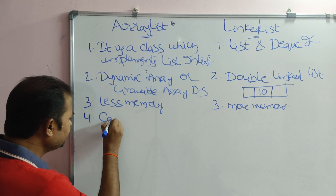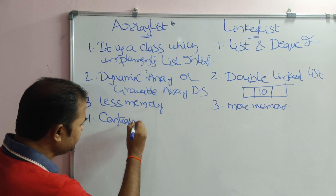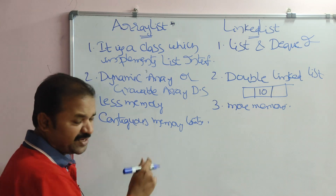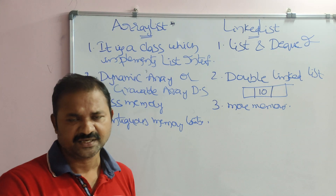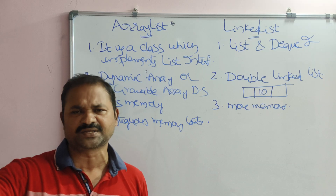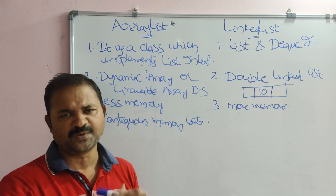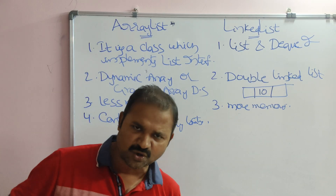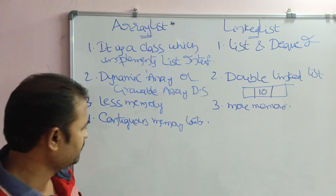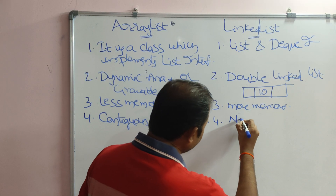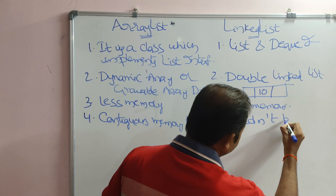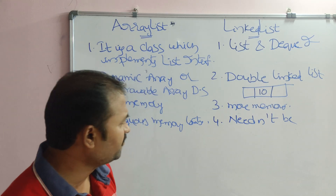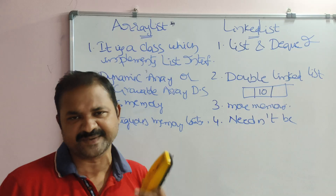ArrayList stores elements in contiguous memory locations — adjacent addresses. For example, if the first element is at address 1000 and has a capacity of 4 bytes, the next element is at 1004, then 1008, 1012, and so on. In LinkedList, elements do not need to be stored contiguously; nodes can be placed wherever free memory space is available.